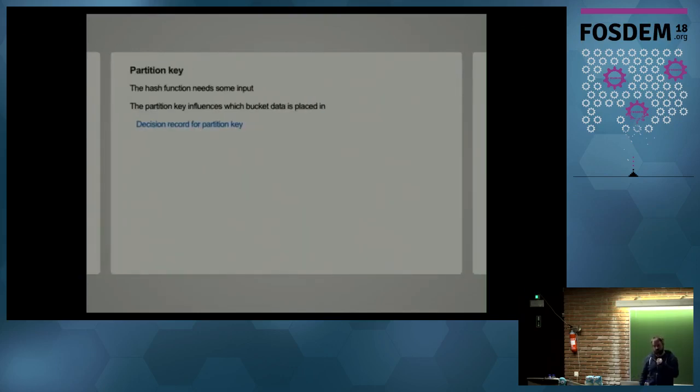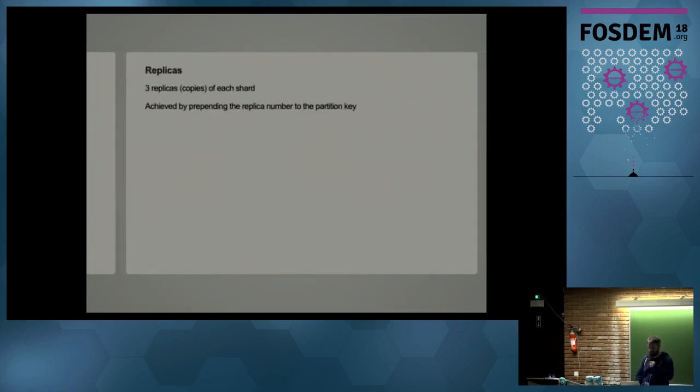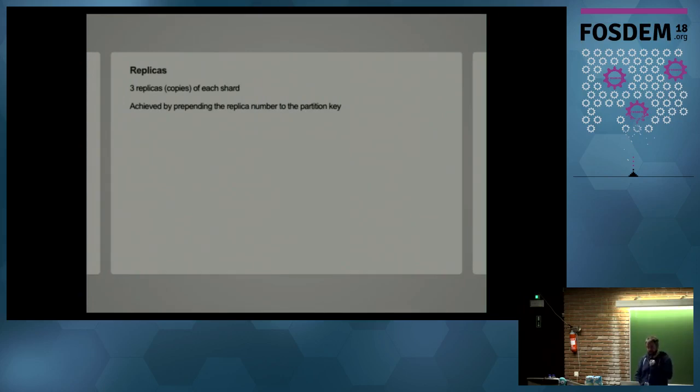So the other thing I needed to figure out was the hash function that I use in consistent hashing needs a partition key. So I needed to figure out what that partition key could be. And the choice of partition key could have a big impact on how many nodes you have to query when you're querying data. And also how many nodes are ingesting data at any one point in time. So again, I've gone into detail on the GitHub repository for how to choose this. But what to include in this was a critical decision in the system. And we need to store three copies of each shard, of each copy of data. So I achieved this by prepending the replica number to the partition key.